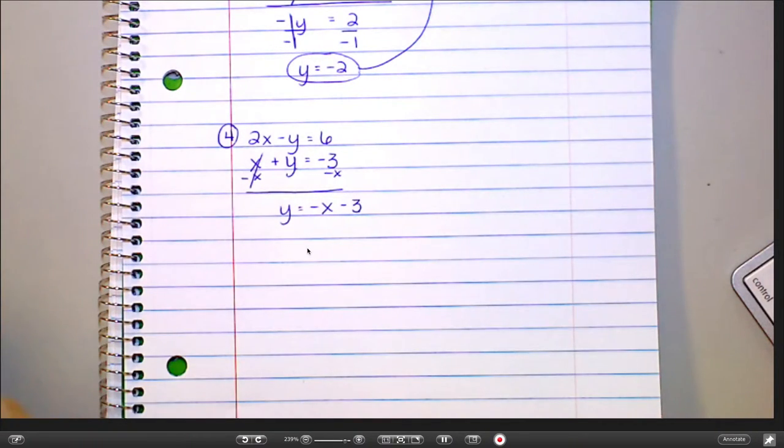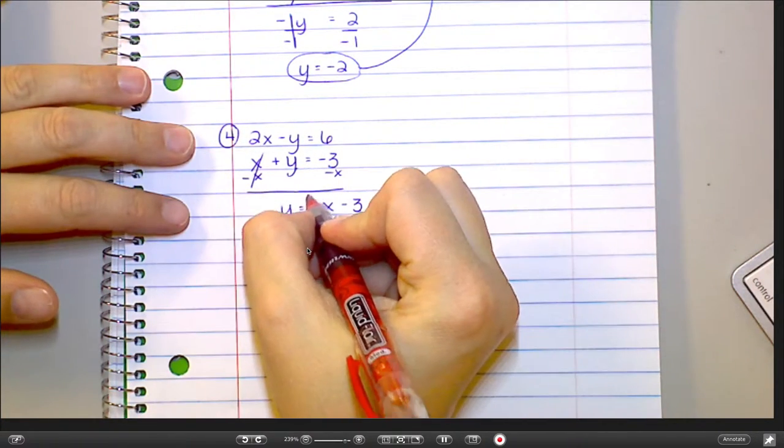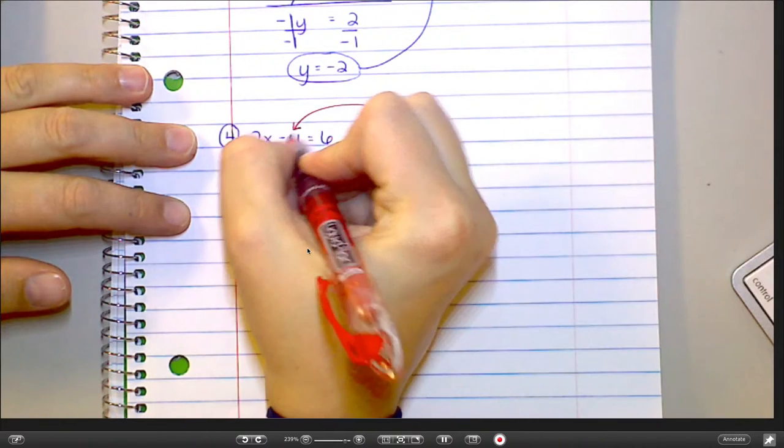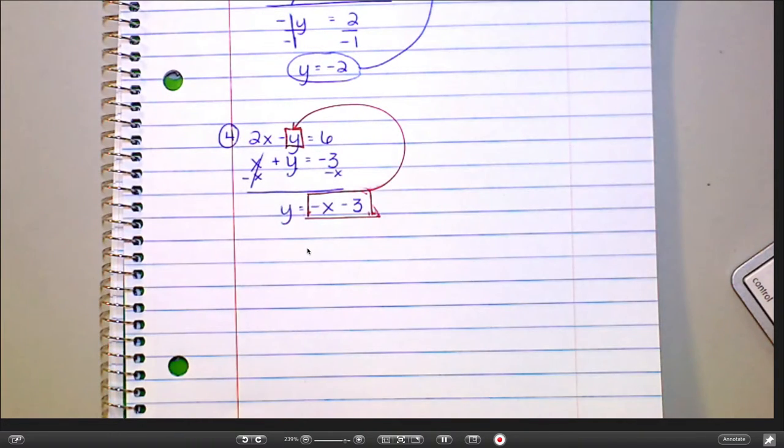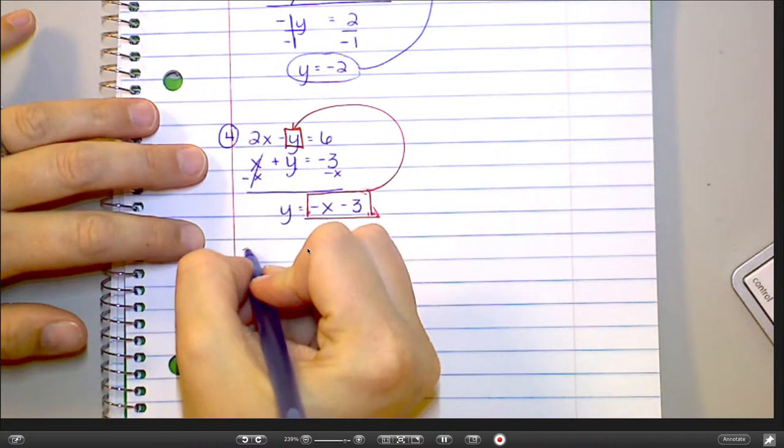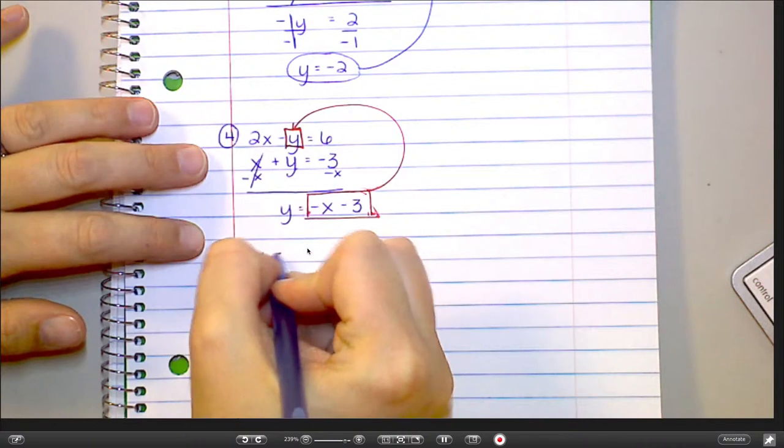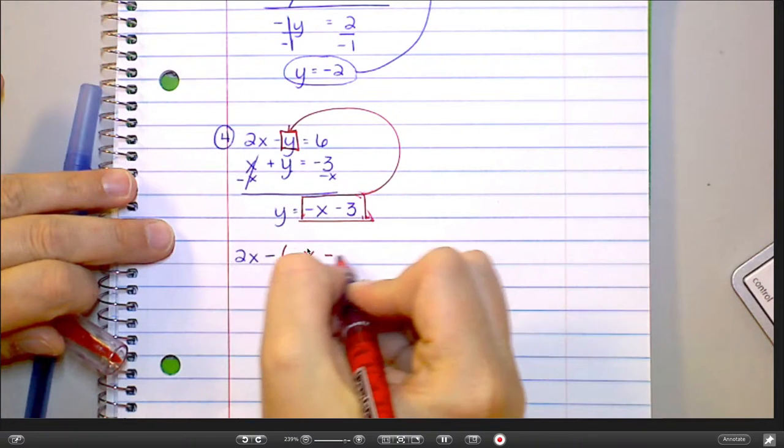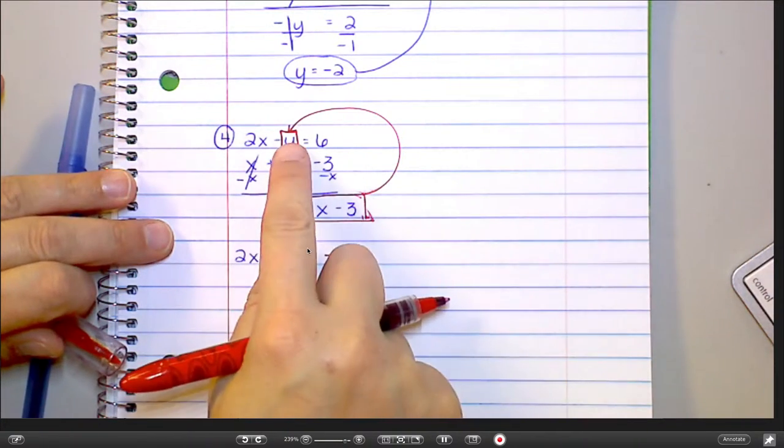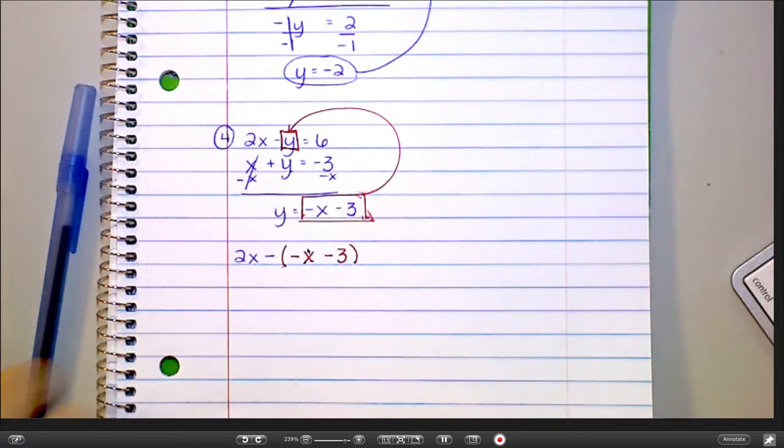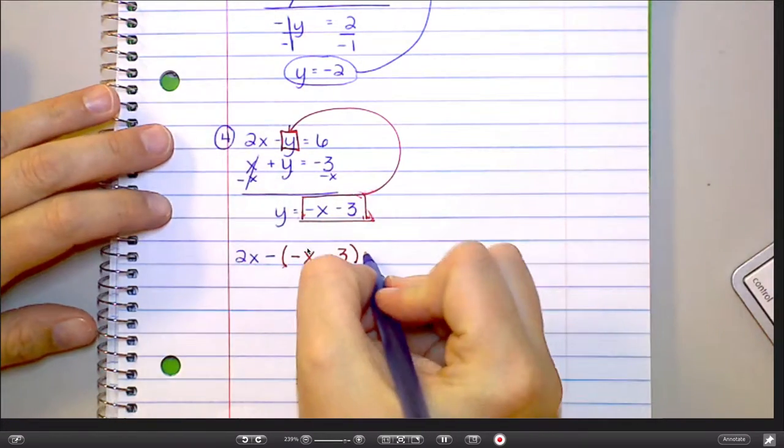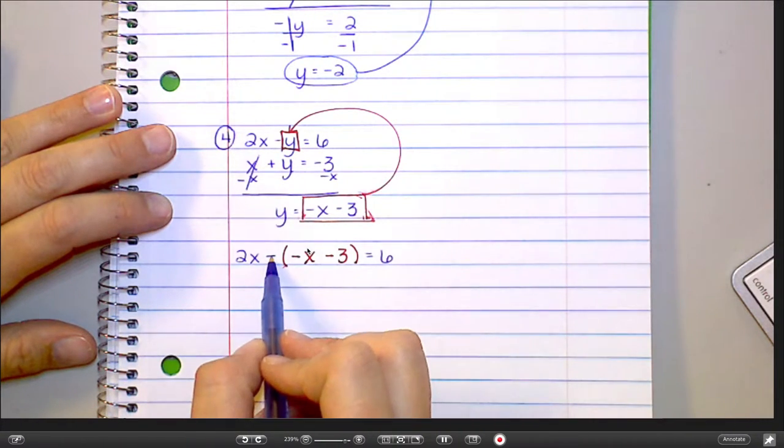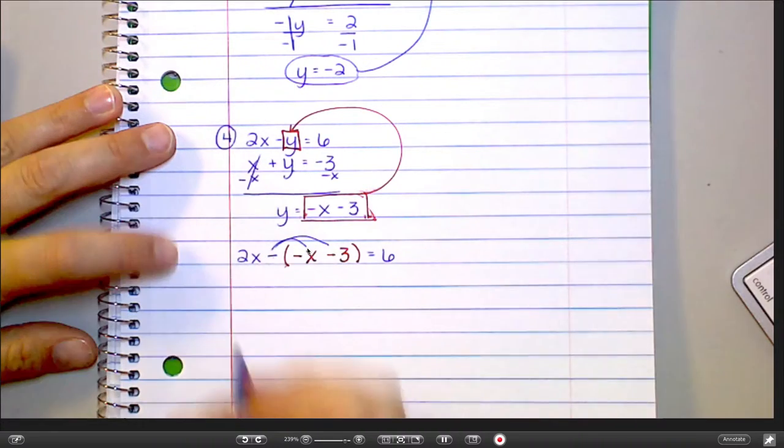What do I do from here? Plug it in. So I'm going to take what y equals and plug it in for y up here. Now this one has some crazy negatives going on. So I'm going to have 2x minus, and then in parentheses, I'm going to have negative x minus 3. So what I wrote in red there is replacing that y, but you still need that minus sign in front of it, and that's going to make a difference in a minute. Because what do I have to do with that negative sign? Distribute. I have to distribute it, which is going to change the sign on everything.